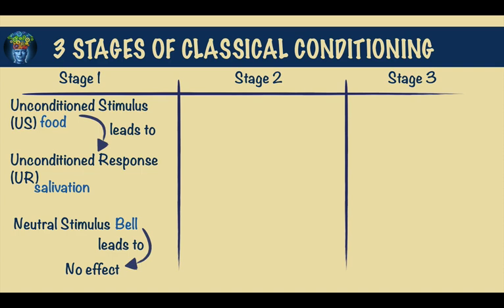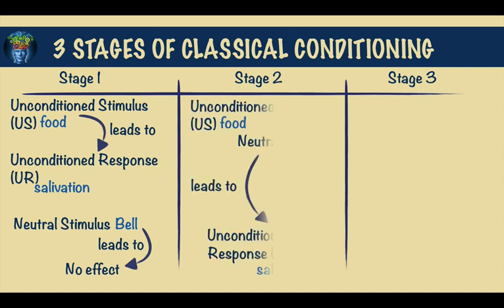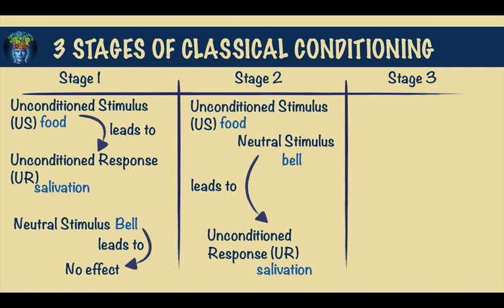Stage 2 is an acquisition or training phase where the unconditioned stimulus is paired with the neutral stimulus. Because the US is still present, this pairing leads to the UR — the salivation. After repeated pairing, an association is formed.